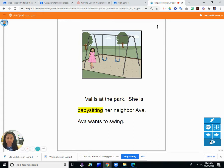Val is at the park. She is babysitting her neighbor, Ava. Ava wants to swing. So Val is babysitting Ava. This must be Ava. And she wants to go on the swings. So have you been to the park? And do you like to ride the swings?